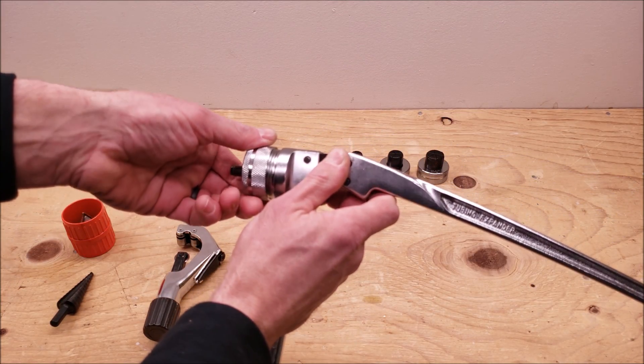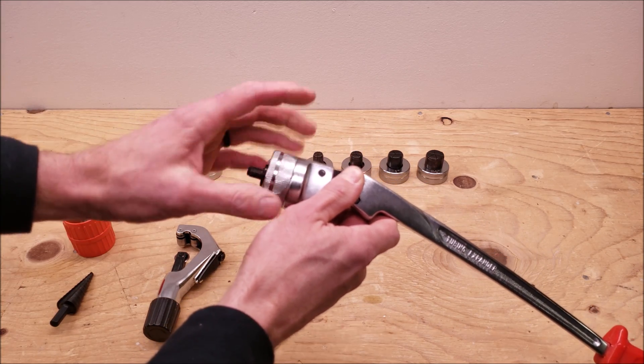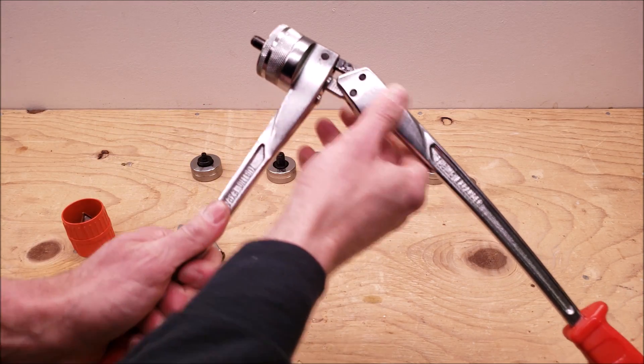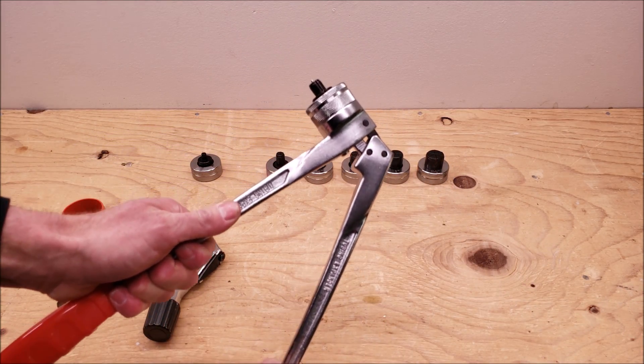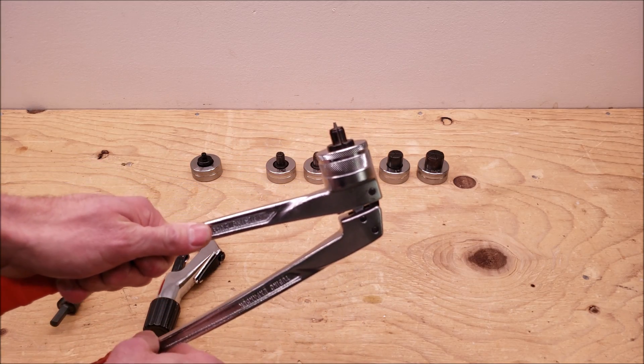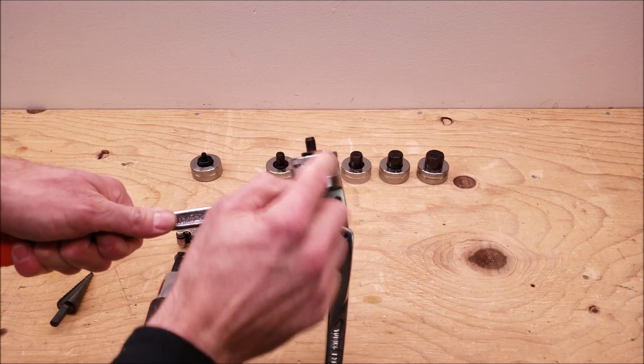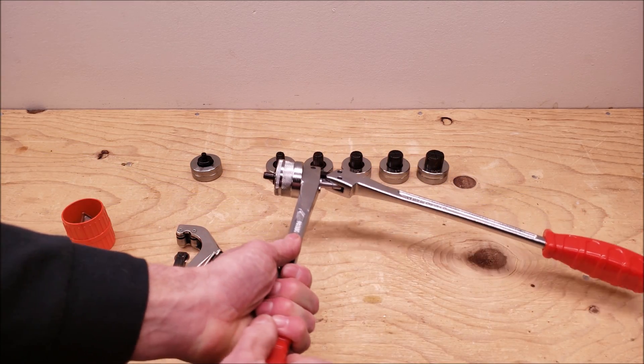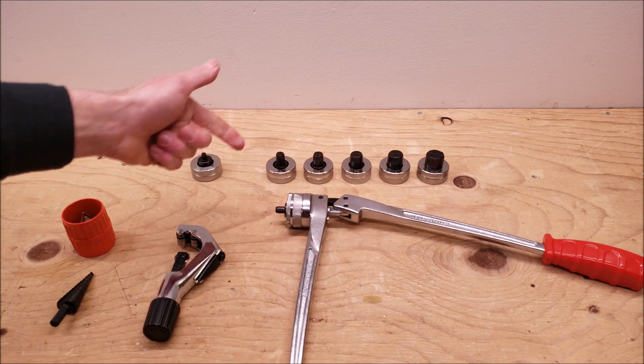Then what you do is you just put this cone in and then you just screw it forward. And there you have it. And what's going to happen is as you turn this it's going to expand that front portion right there. So we're going to leave this tool just like this and we'll add our copper tube.